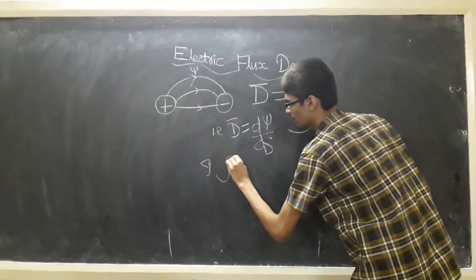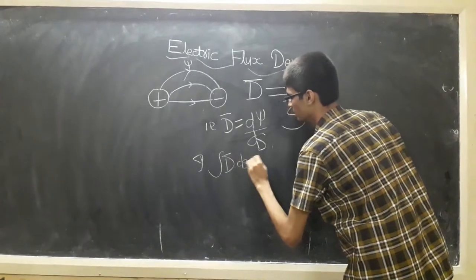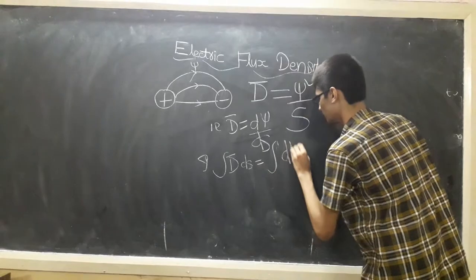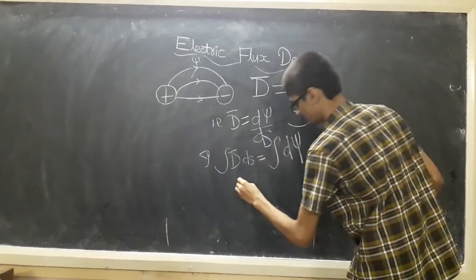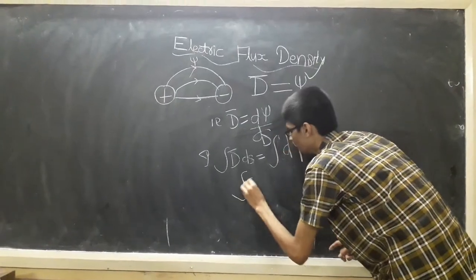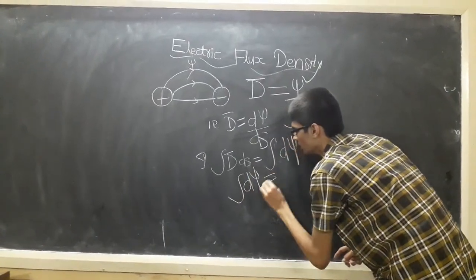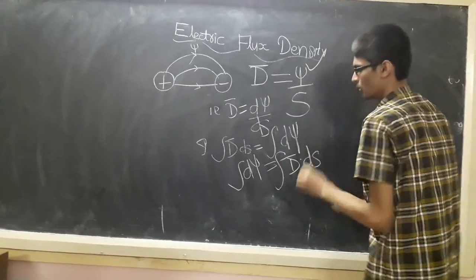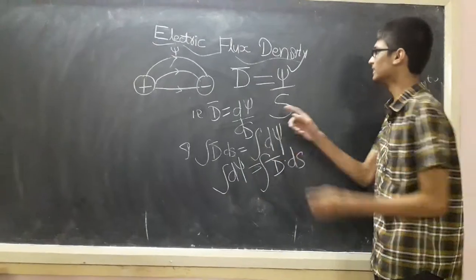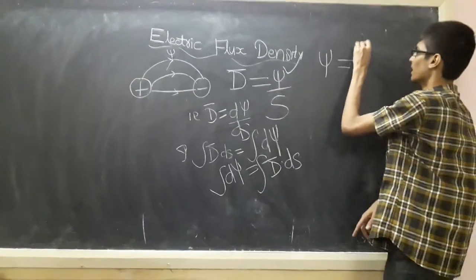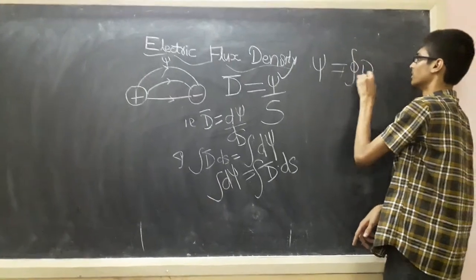D-bar is equal to d-psi. Integrating on both sides, the integration of d-psi is psi, which is equal to the integration of D-bar dot ds.